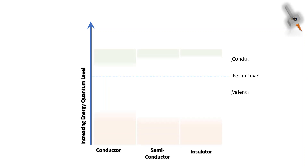With this we will define the three types of material. A conductor has overlapping valency band and conduction band, thus with a small external excitation, current will flow easily. A semiconductor has a closely placed valency band and conduction band and will require relatively higher external excitation to initiate current flow.